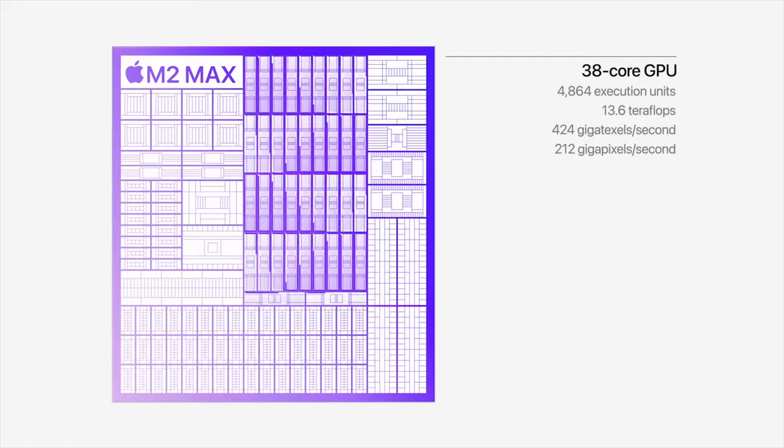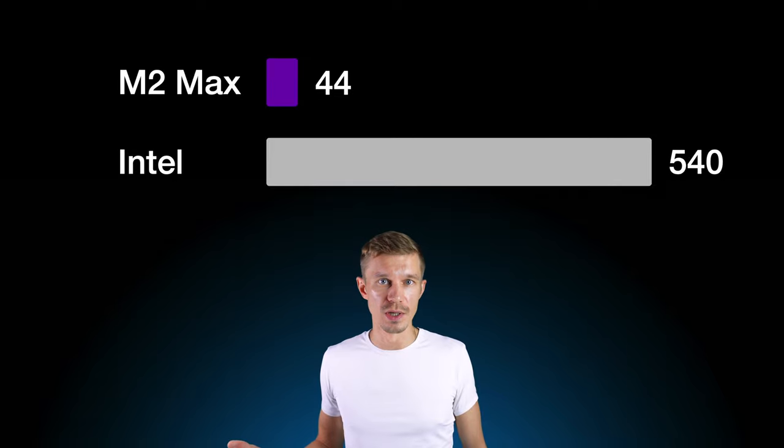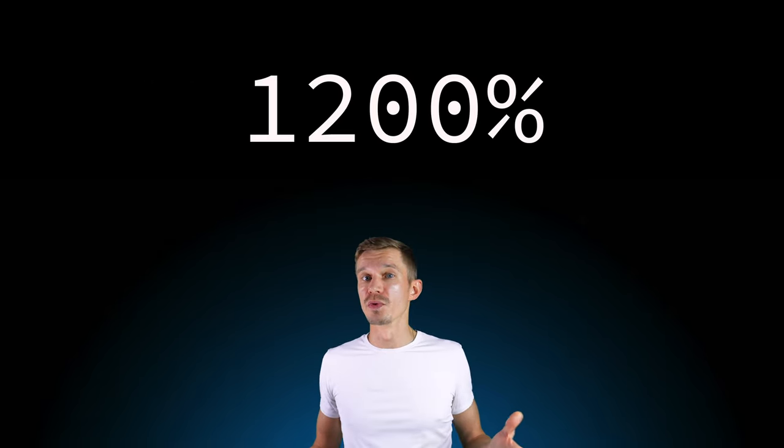What if we have two hypothetical people — one with the Intel Mac, the other with the M2 Max — and both need to train the largest model from our example for 50 epochs using all available means? The M2 Max will fire up its 38 GPU cores and complete the task in 44 minutes. The Intel user will have to rely on the CPU and will cripple his machine for 9 hours straight until the job is done. This is just an amazing difference.